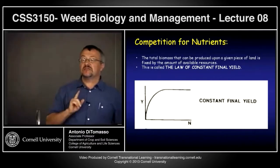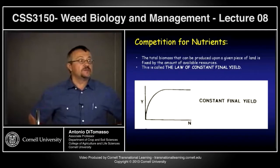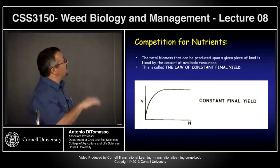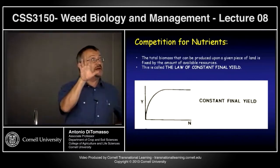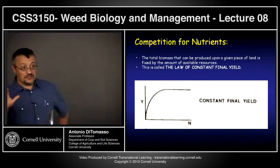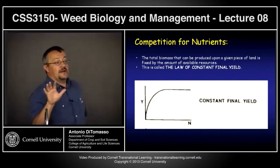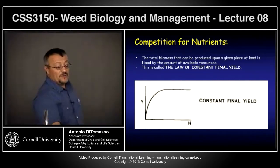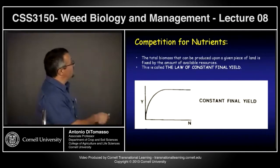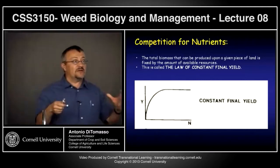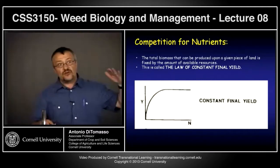What I'd like to do today is continue on weed-crop competition and this whole idea of constant final yield. From last class, I talked about the fact that there are very few laws in ecology — contrary to physics where you have a whole bunch of laws. This is one: once you get past a given density, your total yield of the system reaches the carrying capacity and flattens out.